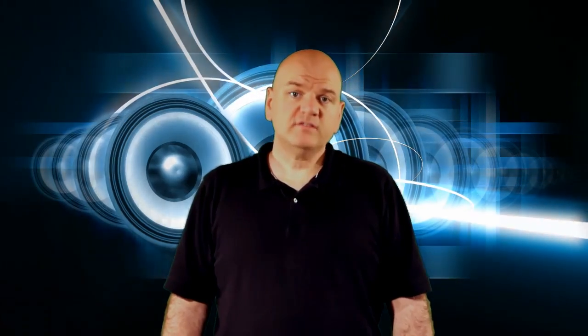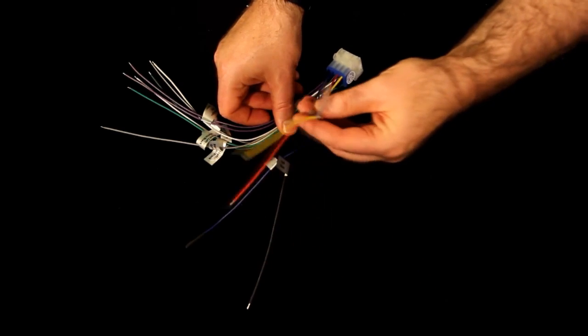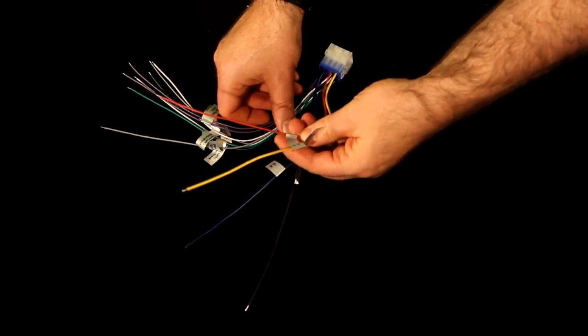Of the remaining wires, two of them are power wires. One is a direct power wire that connects directly to the positive terminal on the boat's battery. The other is a switch power wire. Usually it connects to the boat's ignition so that when you turn the boat off the stereo goes off as well.